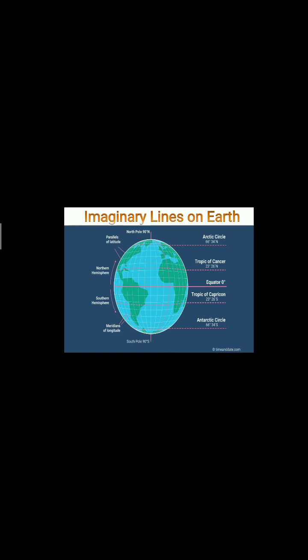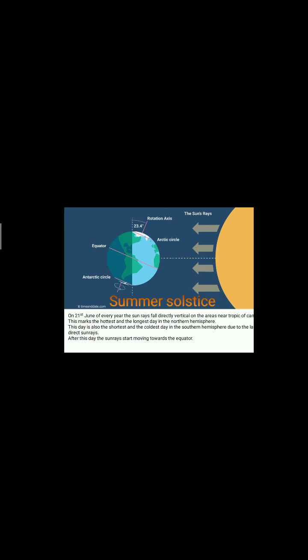Now, when do you feel hot and when do you feel cold? When is it summer and when is it winter? On 21st June of every year, the sun's rays fall directly and vertically on the areas of the Tropic of Cancer. Because the sun rays are direct, it is very hot over there, and because direct sun rays are there for a longer time, it is also called the longest day. So 21st June is also called the hottest and longest day in the northern hemisphere, and this day is known as summer solstice.